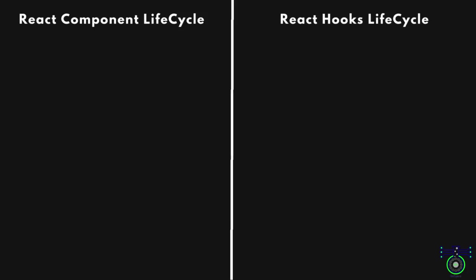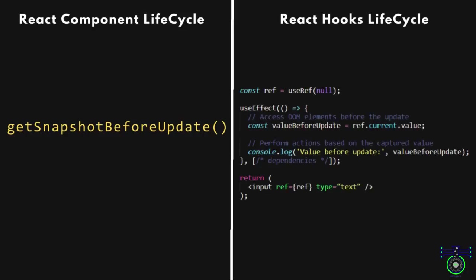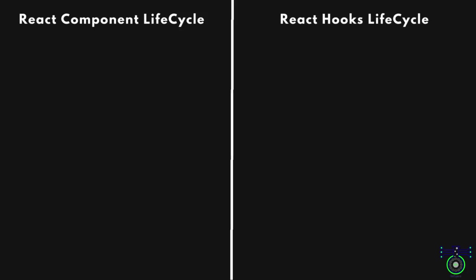The next slide features getSnapshotBeforeUpdate. We use const ref = useRef() — a hook used to create a mutable ref object that persists across renders, used here to reference a DOM element. Inside the useEffect block, const valueBeforeUpdate = ref.current.value accesses the value of the referenced DOM element before any update. ref.current.property allows you to access the current value of the referenced DOM element. A console.log outputs the value before the update to the console. The dependency array is intentionally left empty, indicating this effect does not depend on any specific props or state changes — it runs once after the initial render.